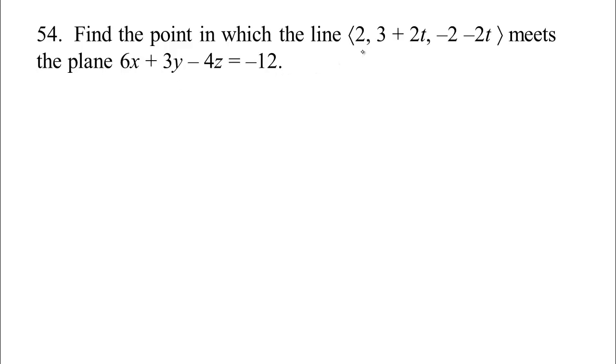So basically we can take our x, y, and z from the line and plug them into the equation for the plane. So we have 6 times 2, because the x coordinate is 2, 3 times y, but if you're on the line, the y coordinate is 3 plus 2t, and then minus 4 times z, and z is negative 2 minus 2t. That has to equal negative 12. So if we multiply out here, we get an equation for t.